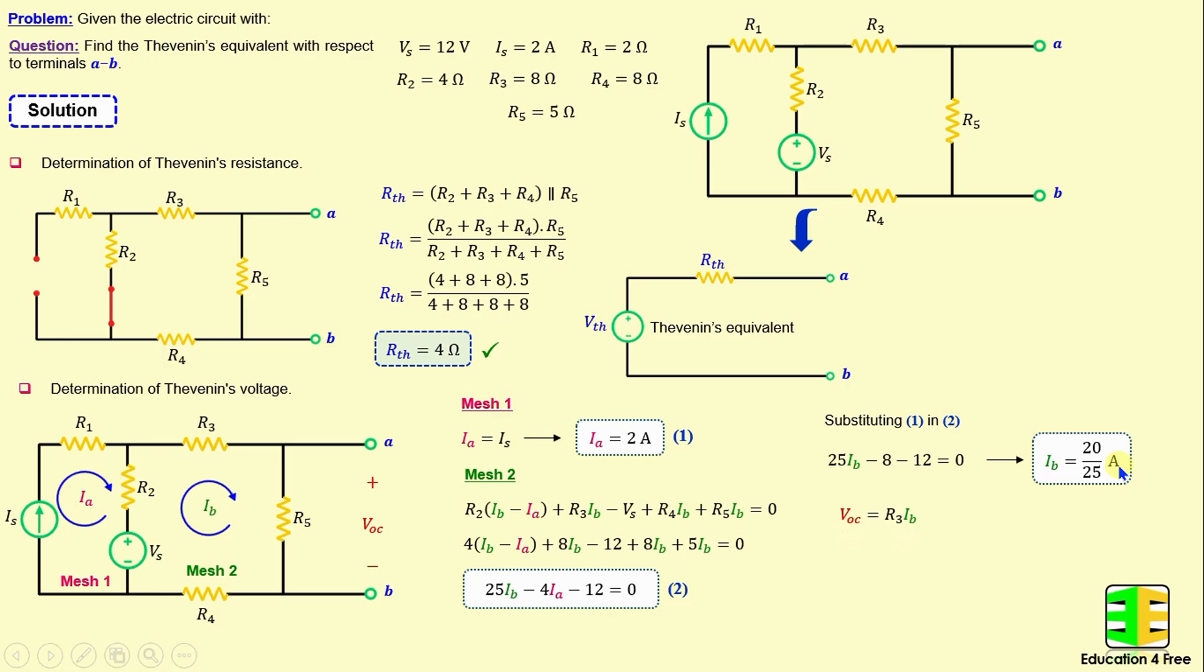The voltage VOC is equal to R3 times Ib, according to Ohm's law, and if we replace R3 and Ib with their numerical values, we obtain VOC is equal to 4 volts. That means VTH is equal to 4 volts.